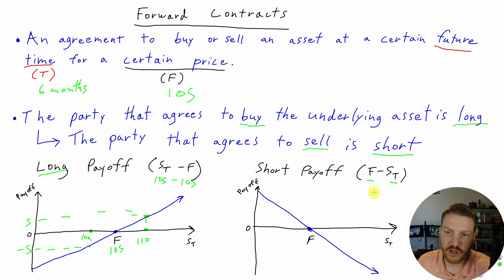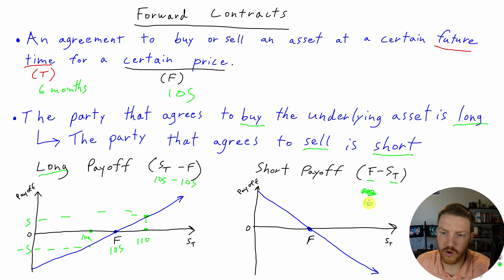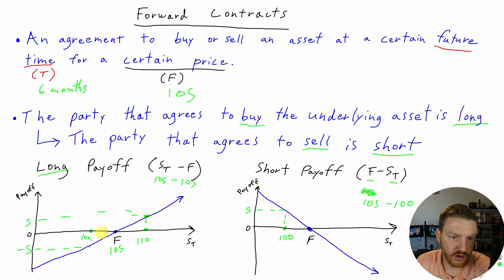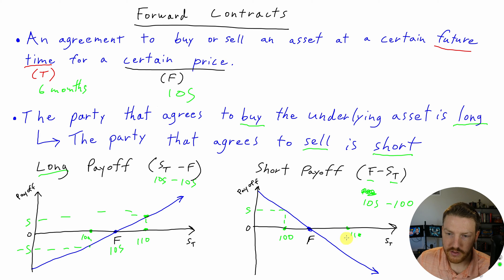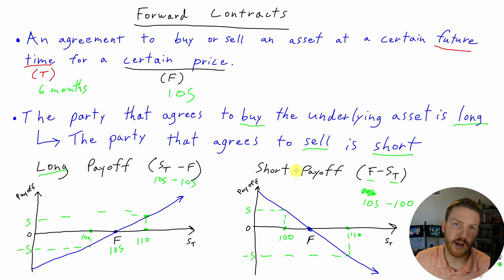In the same example, if the price ended up being $100, while the forward price was $105, the payoff on the short side is actually going to be $5 — they gain the $5 that the other side of the contract lost. Whereas if the price ends up being $110, the short is actually going to lose $5, because the short loses when the price of the stock rises.